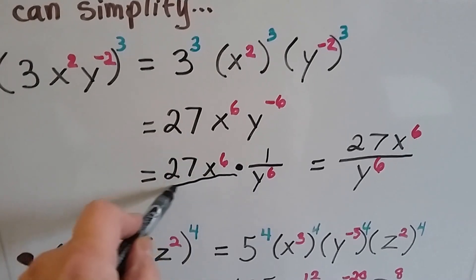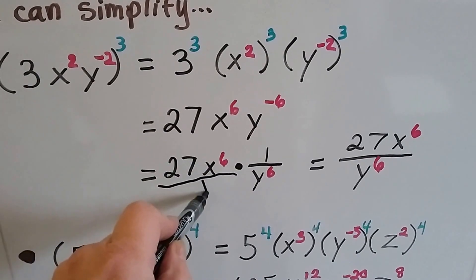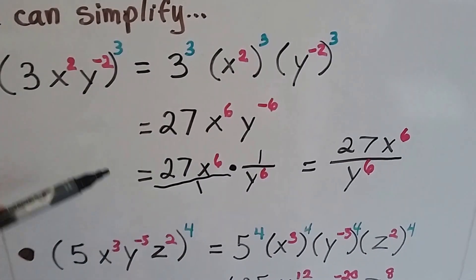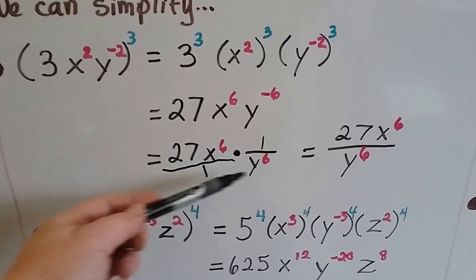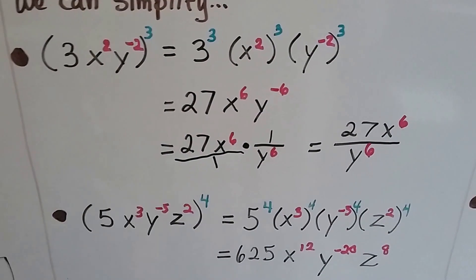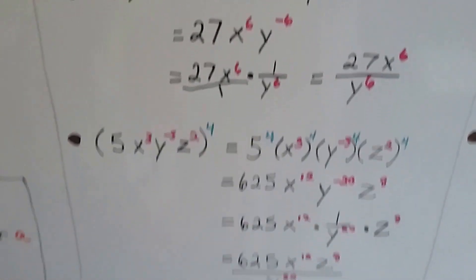Technically we can put a 1 underneath these, so these are all multiplied by 1, and then the y to the sixth power is multiplied by 1.